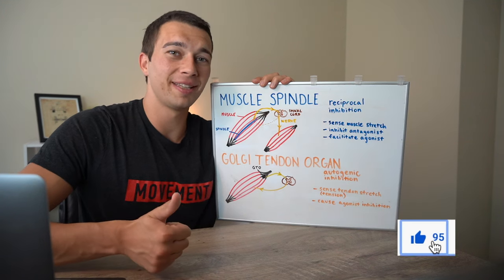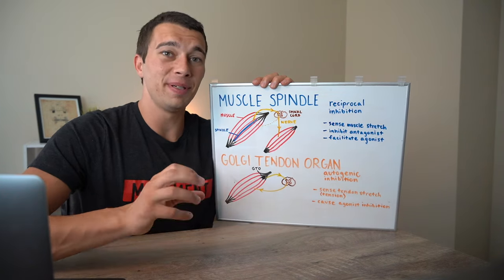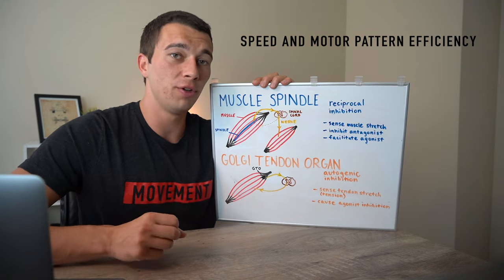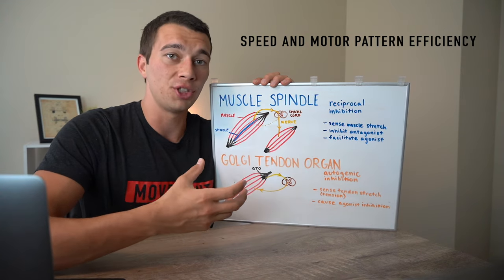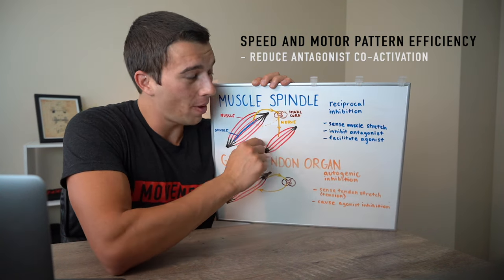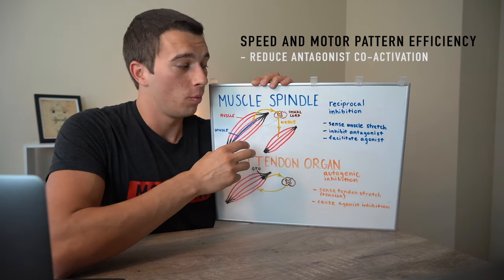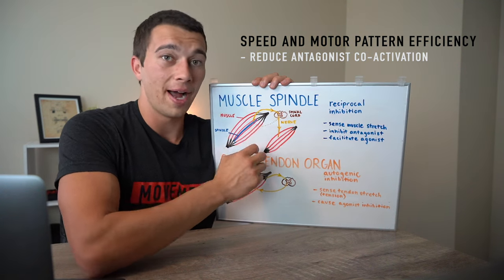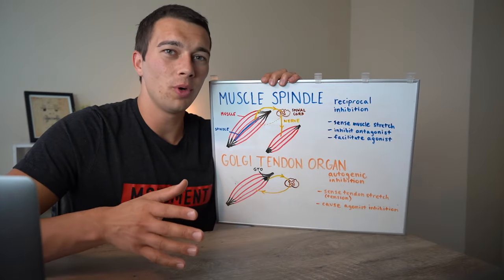Another training principle involving the muscle spindles and Golgi tendon organs is speed training and motor pattern efficiency training. If we're doing fast training and getting more efficient in quick movements like sprinting or throwing a ball, over time as our motor patterns become more efficient we get improved muscular coordination. What happens is we reduce antagonist coactivation, which allows more agonist activation without the antagonist needing to coactivate and slow us down.